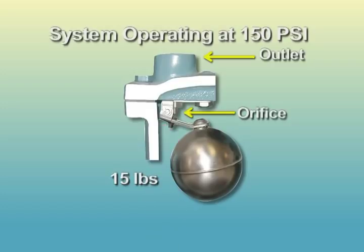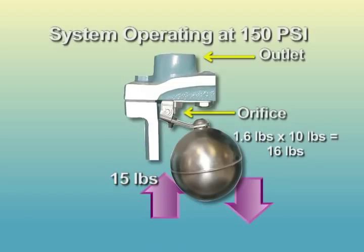The effect of atmospheric pressure on the valve is minimal due to the size of the orifice. So a valve with a float weight of 1.6 pounds times the mechanical advantage provided by the lever of 10 pounds results in 16 pounds of force acting to lower the float and open the orifice. Because the force acting to open the valve at 16 pounds is greater than the force to close the valve at 15 pounds, the valve will open during system operation.